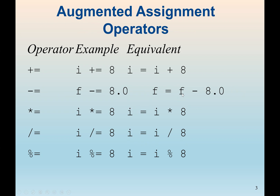The goal of augmented assignment is to update the current value in the variable. For example, minus-equal means f equals f minus 8.0 — whatever the f value is, we subtract 8 from it and store the result back in f. We also have multiply-equal, divide-equal, and remainder-equal. For multiply-equal: if i equals 1, then i times-equal 8 gives 8. For divide-equal: if i is 16, then 16 divided by 8 gives 2, stored back in i.